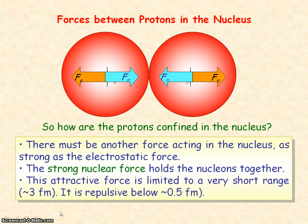This force is very short range in that it only acts between neighbouring nucleons. So it's attractive up to three femtometers. But it has to be repulsive below approximately half a femtometer in order to avoid nucleons collapsing within each other inside the nucleus.